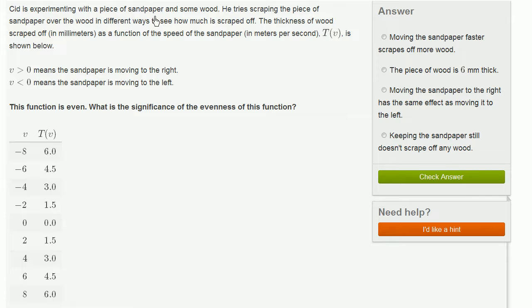Sid is experimenting with a piece of sandpaper and some wood. He tries scraping the piece of sandpaper over the wood in different ways to see how much is scraped off. The thickness of wood scraped off in millimeters as a function of the speed of the sandpaper in meters per second, T of v.